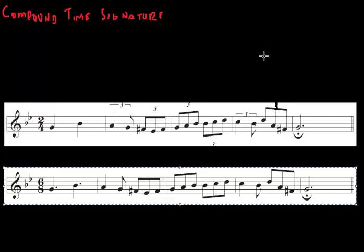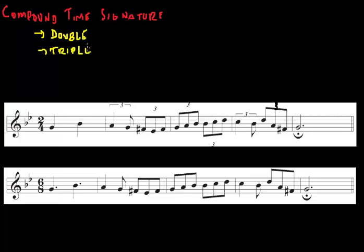There are two categories of time signatures, simple and compound. Now we've already talked about simple time, but compound time is divided into the same three groups as simple time, called double, meaning two, triple, meaning three, and compound quadruple, meaning four.